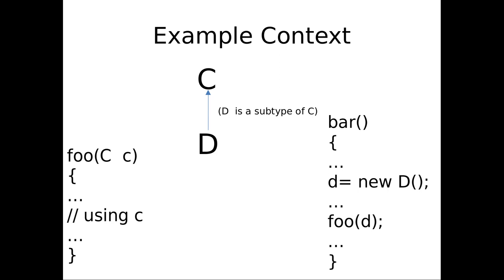We might have D as a subtype of C. Foo is something that uses a C passed into it. If I have some code, Bar, that uses Foo, maybe it creates a D — a subclass of C — and then calls Foo with this D. This is polymorphism. We pass in D as if it were a C — as far as Foo is concerned, this is a C. It has all the appearance of a C. Its apparent type in Foo is a C, but its actual type is a D.